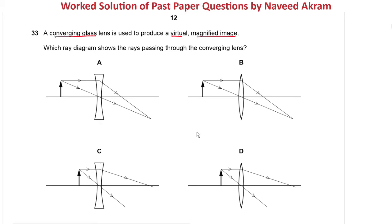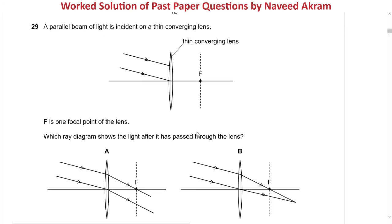Options A and C are not converging lenses — they are diverging lenses. Looking at option B, the image is magnified but it is not a virtual image. In option D, tracing the two rays back gives a virtual image. So option D is the right answer.